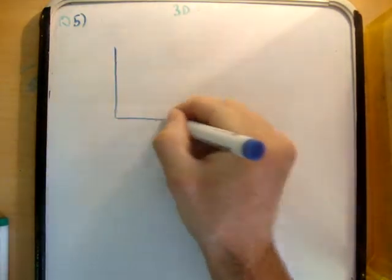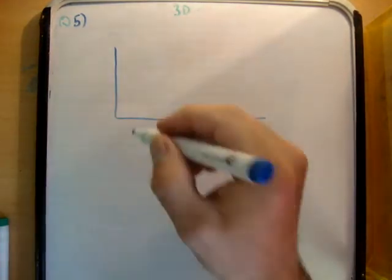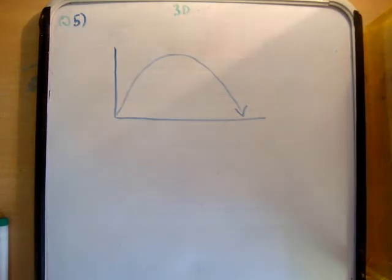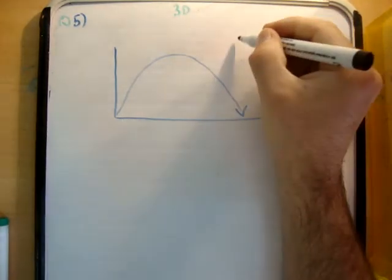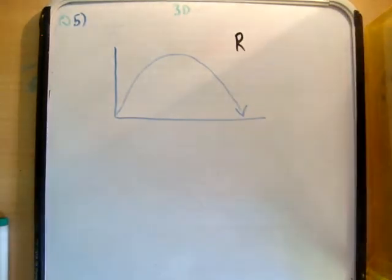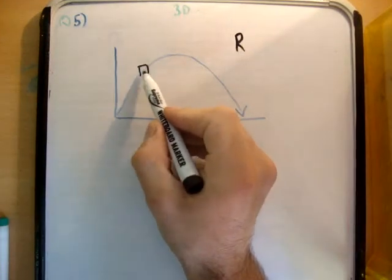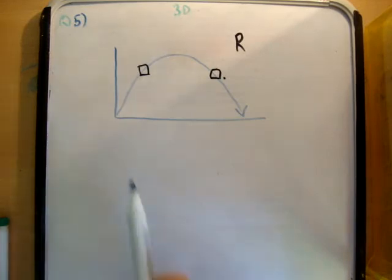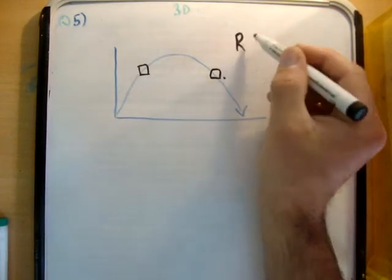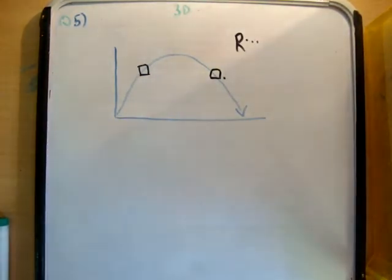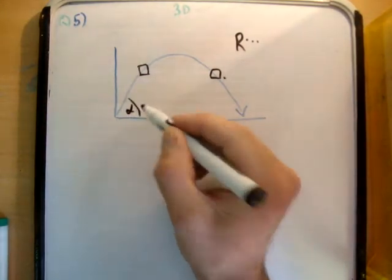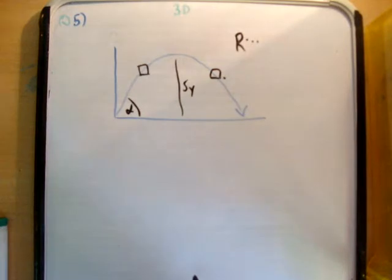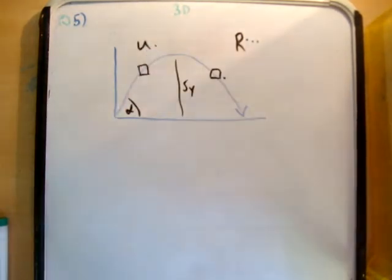What we're doing here is: if this is our xy-plane and this here is our particle, we're working out an expression for the range — we'll call that capital R. Then we're observing the particle and seeing it pass through two points. From knowledge of those two points and the expression we worked out for the range, we're able to get the angle of inclination, s sub y, u — we're able to get everything.